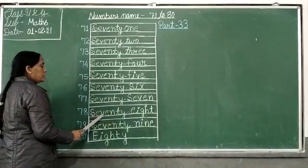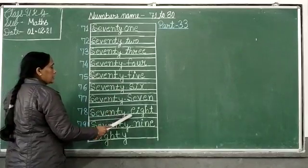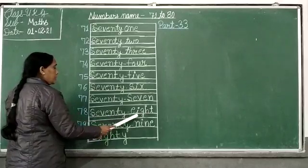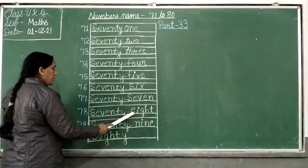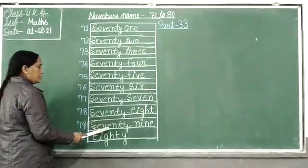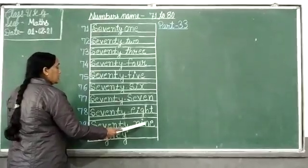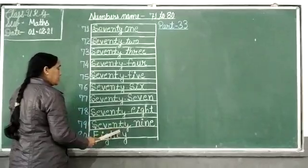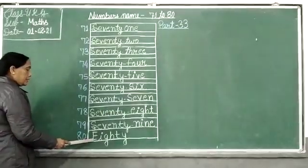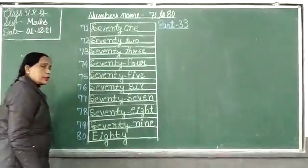S-E-V-E-N-T-Y 70. Seventy 70, N-I-N-E 9, 79. 80: E-I-G-H-T-Y. Dear students,